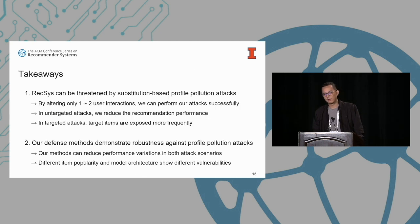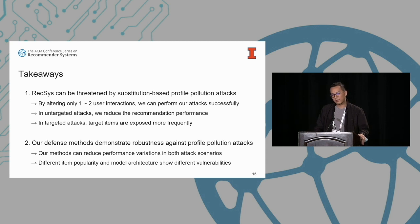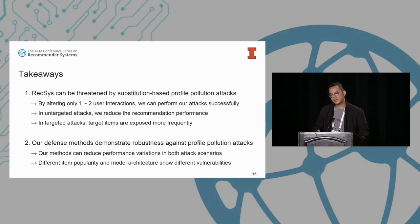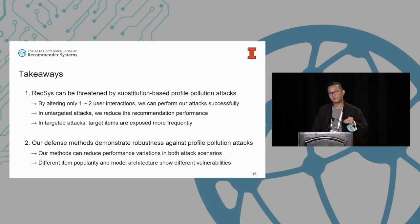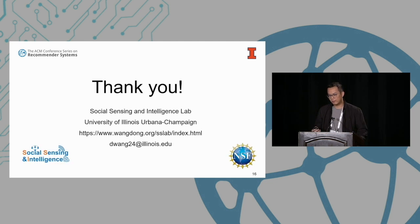Key takeaways: First, sequential recommender systems can be threatened by substitution-based attacks — by altering just one or two user interactions, we can successfully perform both targeted and untargeted attacks. Our defense methods demonstrate robustness against profile pollution attacks, while different item popularity levels and model architectures may have different robustness properties.